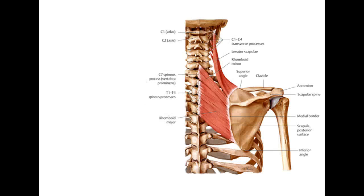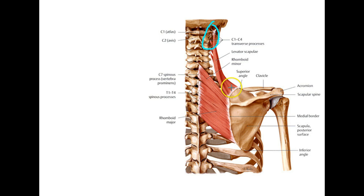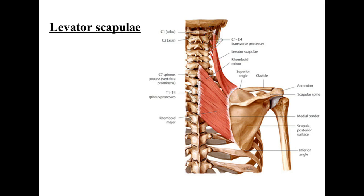Next on our list was the levator scapulae. You can see that muscle's already labeled here. It's attaching to the transverse processes of the cervical vertebrae, C1 through 4, and then onto the upper end of the medial border of the scapula. Levator scapulae — if we have an origin here and an insertion here, I to O is our rule — we're going to get elevation. Levator, elevator — elevation of the scapula. It's right in the name. Easy.